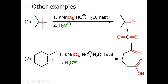Another example involves a trisubstituted alkene where one alkene carbon bears two alkyl groups and the other bears one alkyl group and one free hydrogen. On treatment with hot KMnO4 followed by workup, the CH carbon of the alkene converts into a carboxylic acid, while the carbon bearing two alkyl groups converts into a ketone compound.